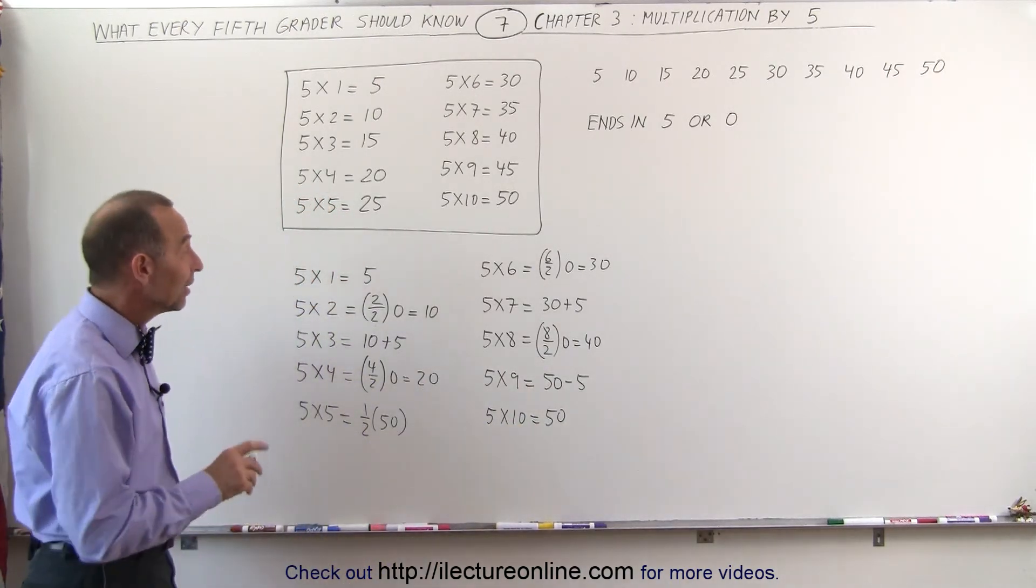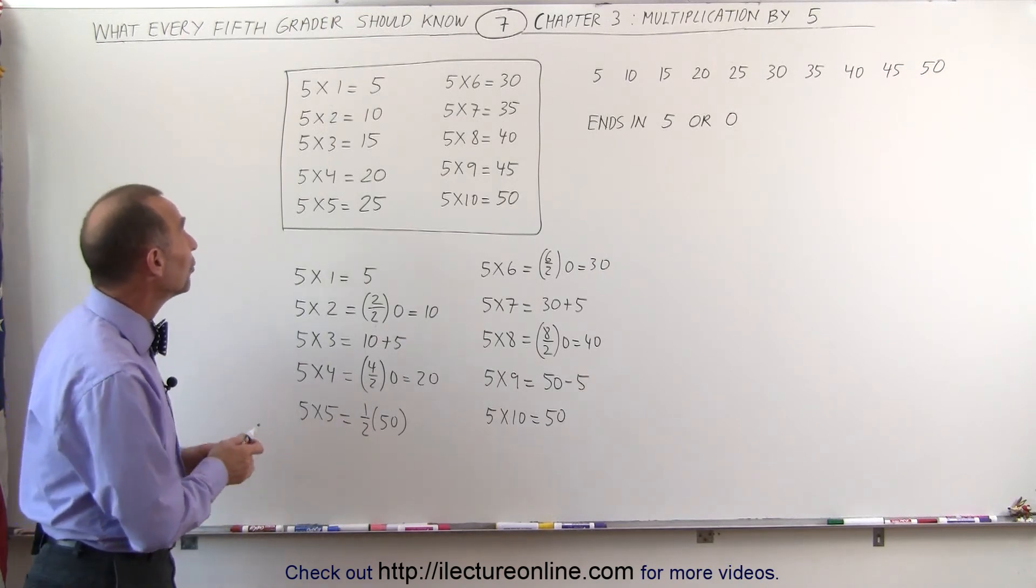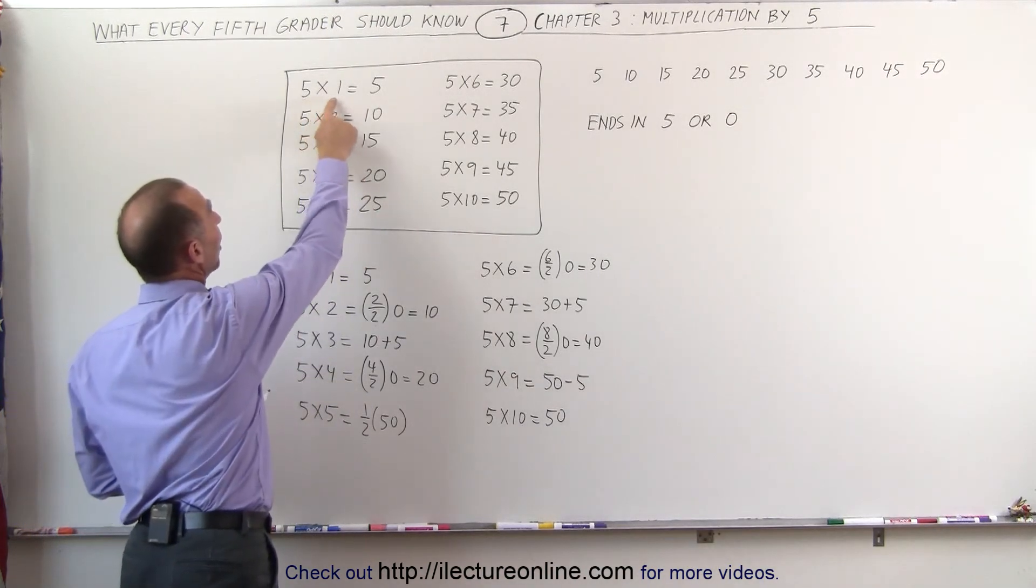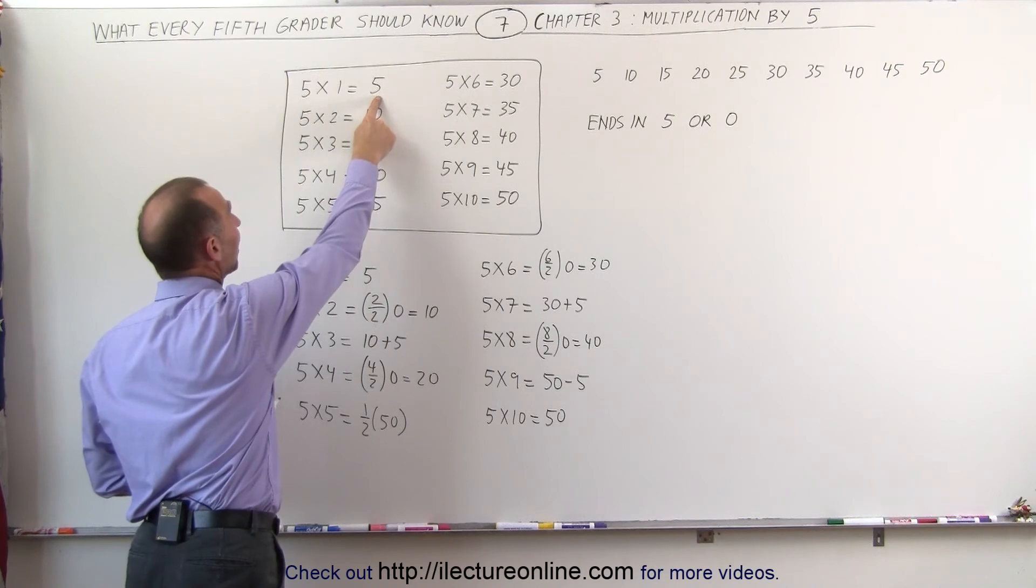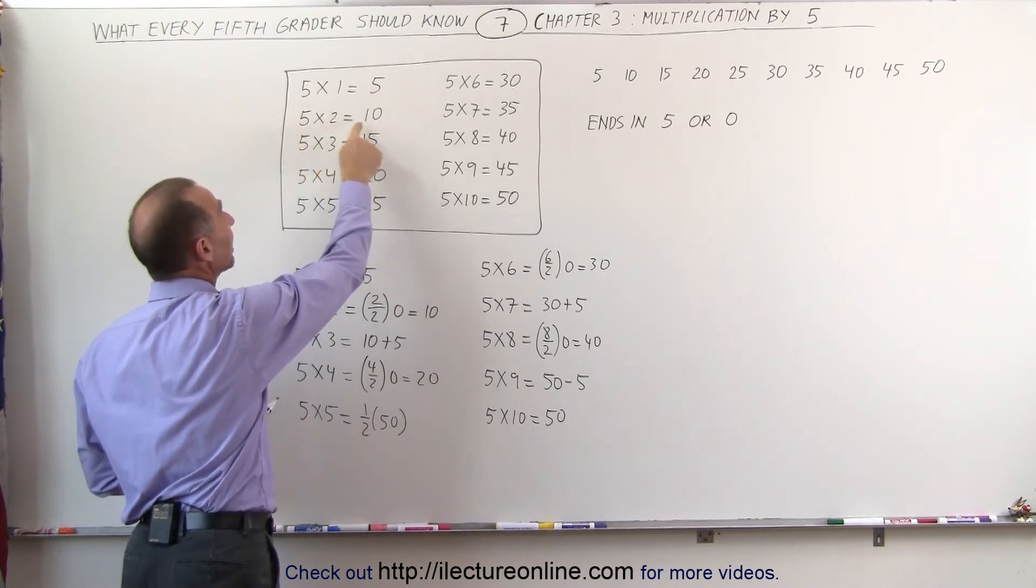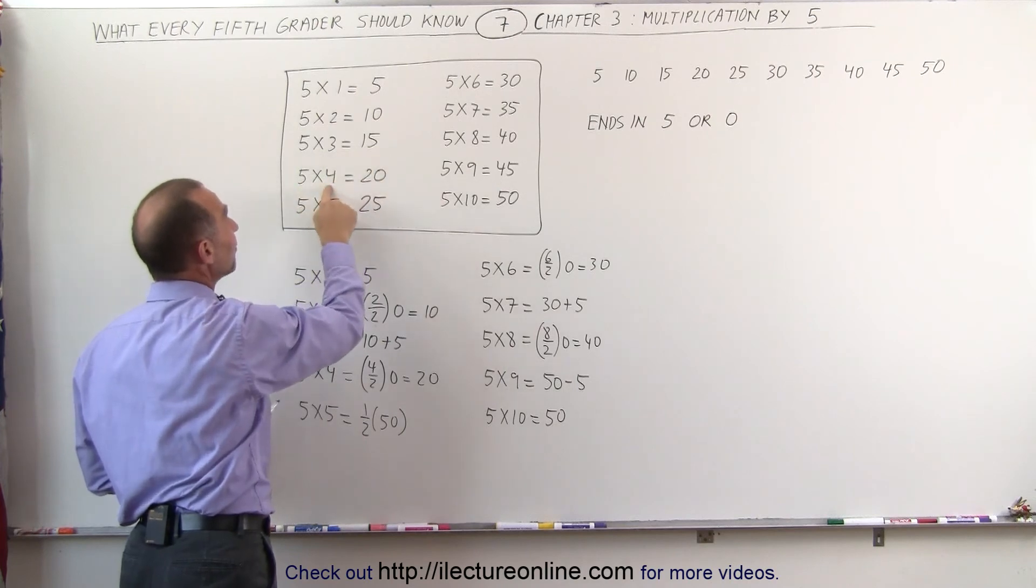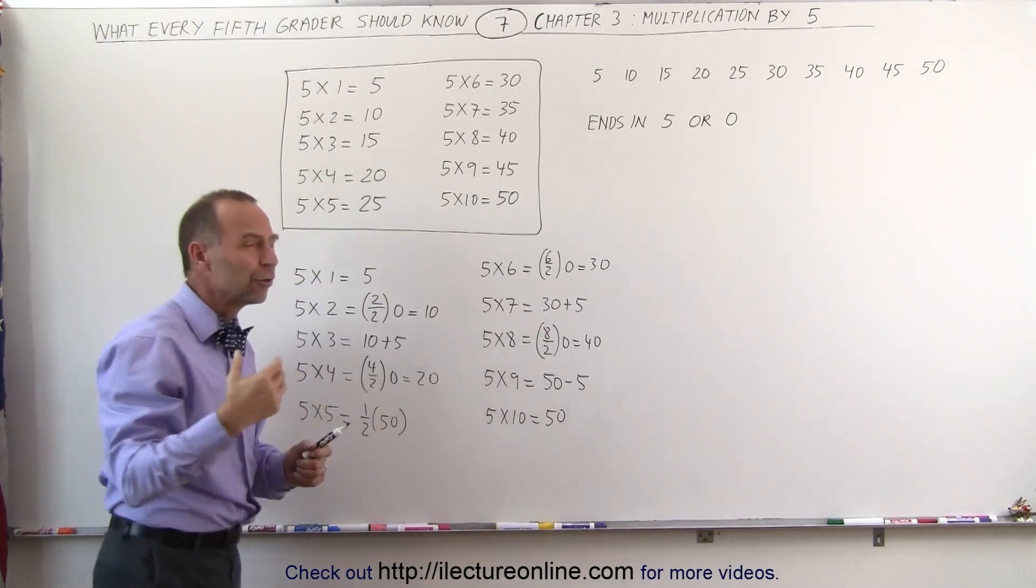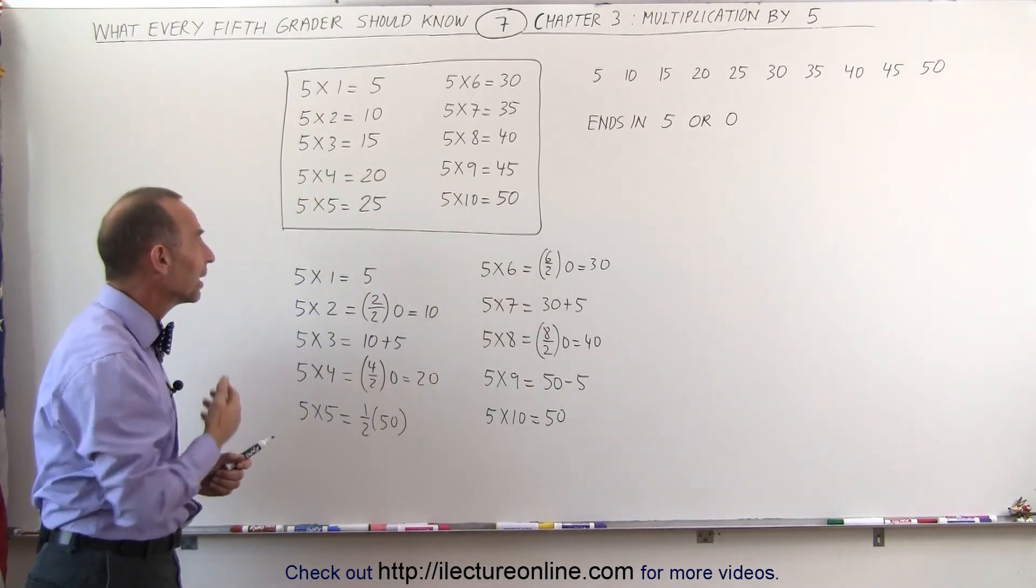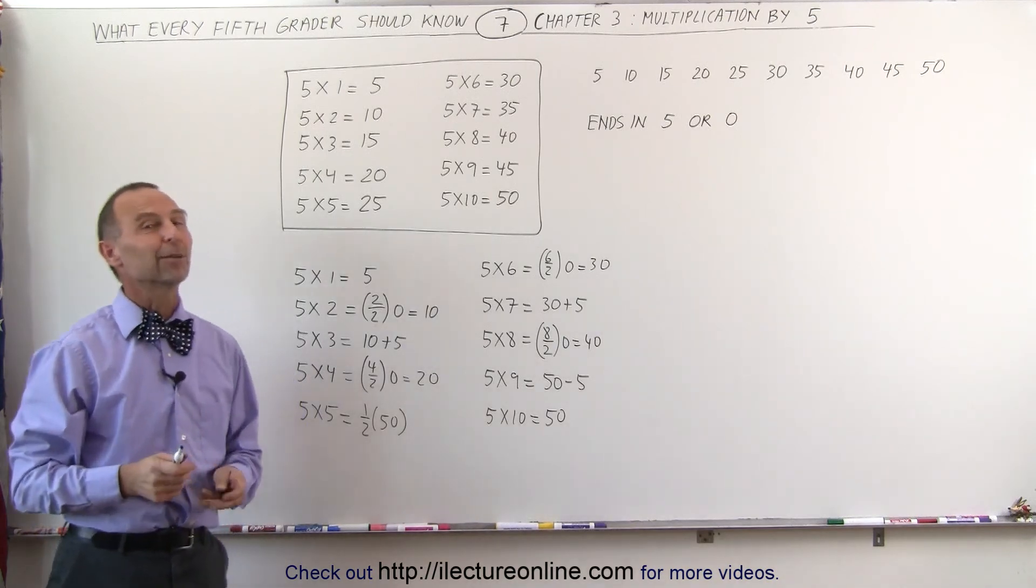Another way of looking at this is to notice that whenever we multiply times an odd number, it ends in a 5, and when we multiply times an even number, it ends in a 0. Times an odd number ends in a 5, times an even number ends in a 0. That also helps us figure out how to multiply by the number 5.